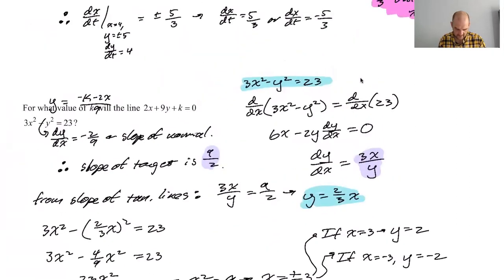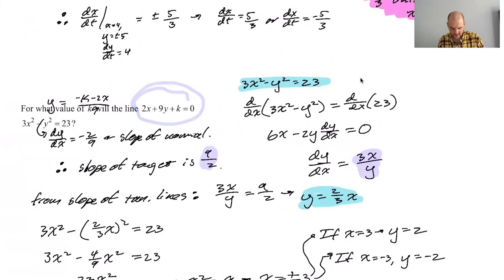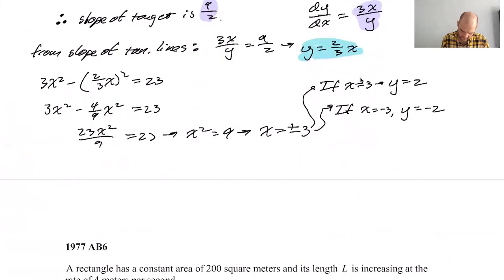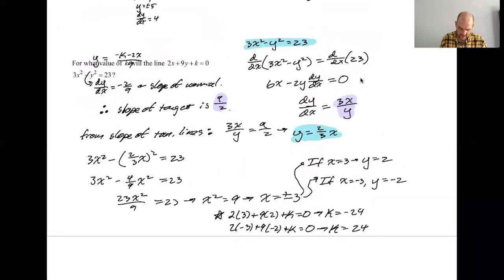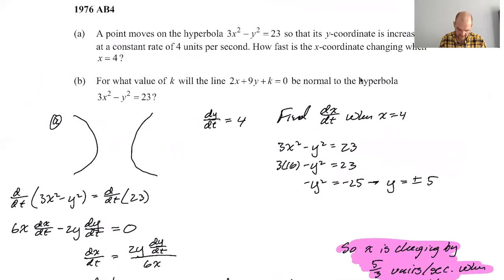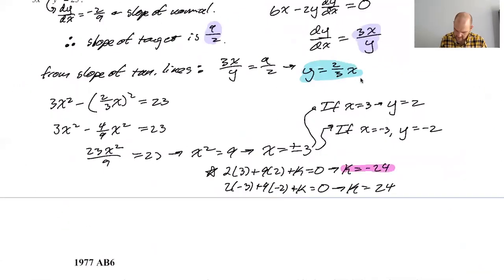Then I got to solve for k, right? So I know that two x plus nine y plus k equals zero. So here k would be six and 18 is 24. So negative 24. And then two times negative three plus nine times negative two plus k equals zero would give me k equals positive 24. And then do I have to like, for what value of k will that, there's two different values. I'm going to highlight both of them. I'm going to say that these are my values.